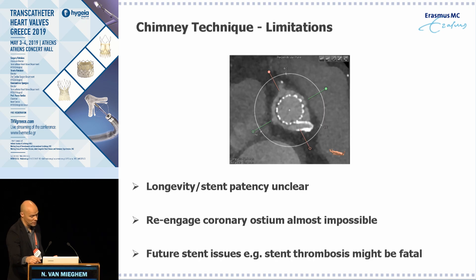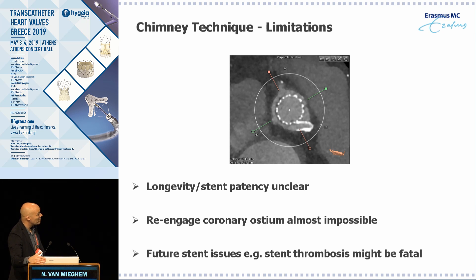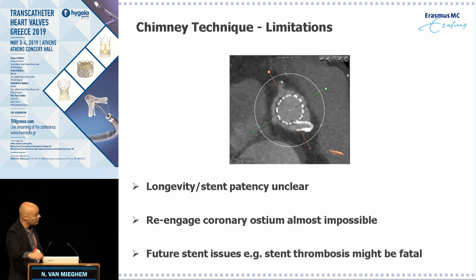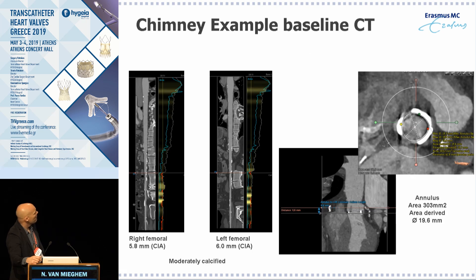With the chimney technique, you implant a stent preventively, protruding from the ostium of the right or left coronary into or above the sinus. The concern is that long-term stent patency is unclear, and re-engaging the coronary ostium will be nearly impossible if there are issues such as thrombotic occlusion or stent-related problems.